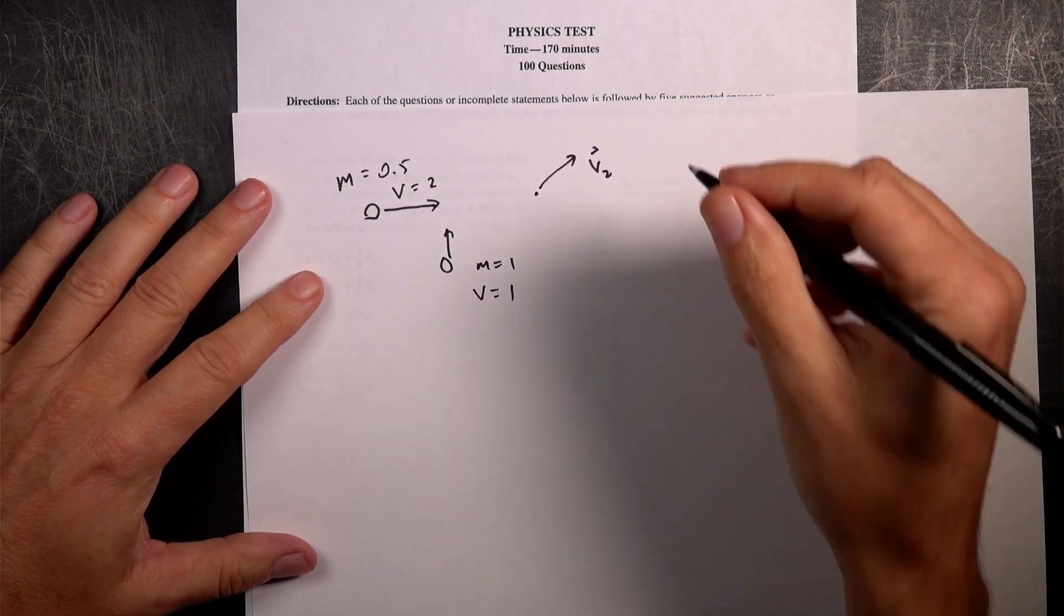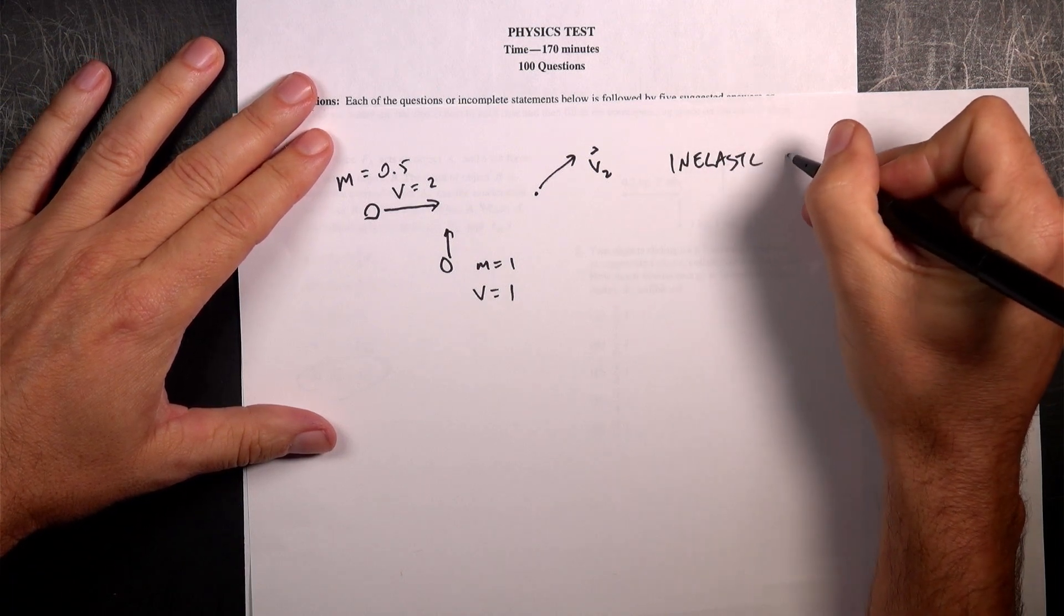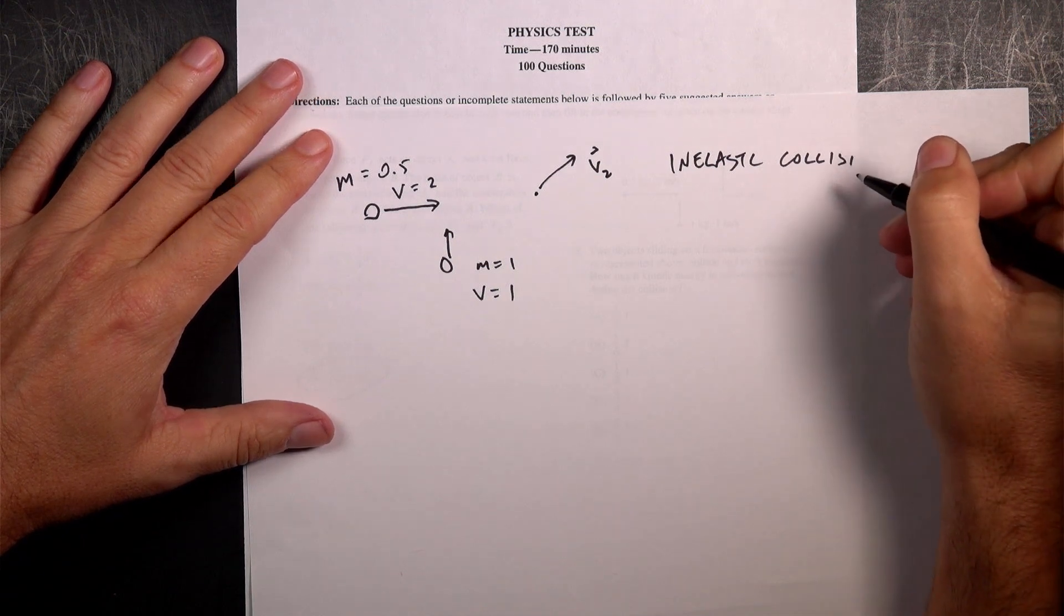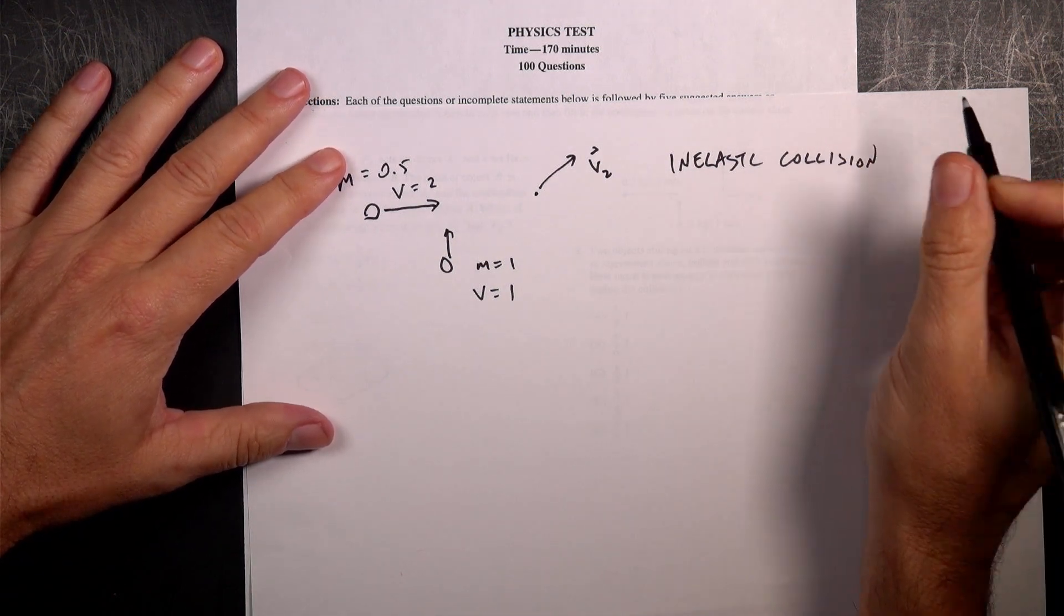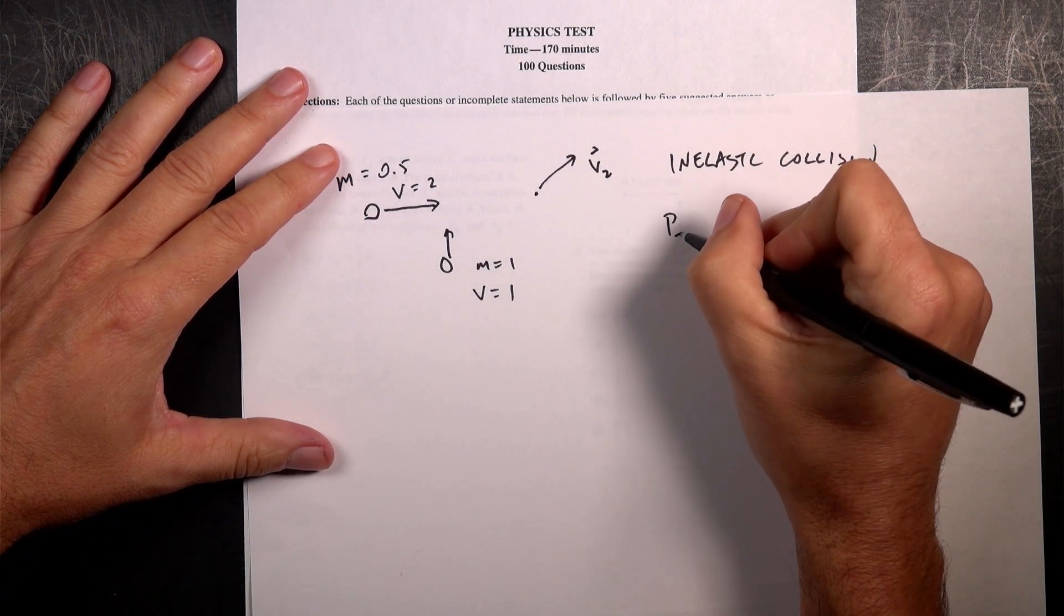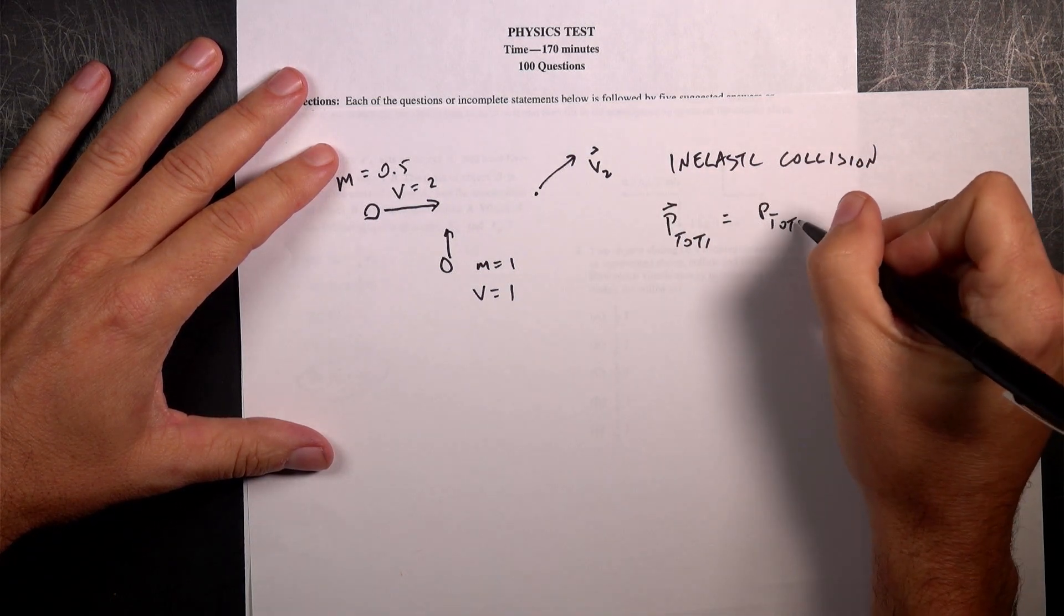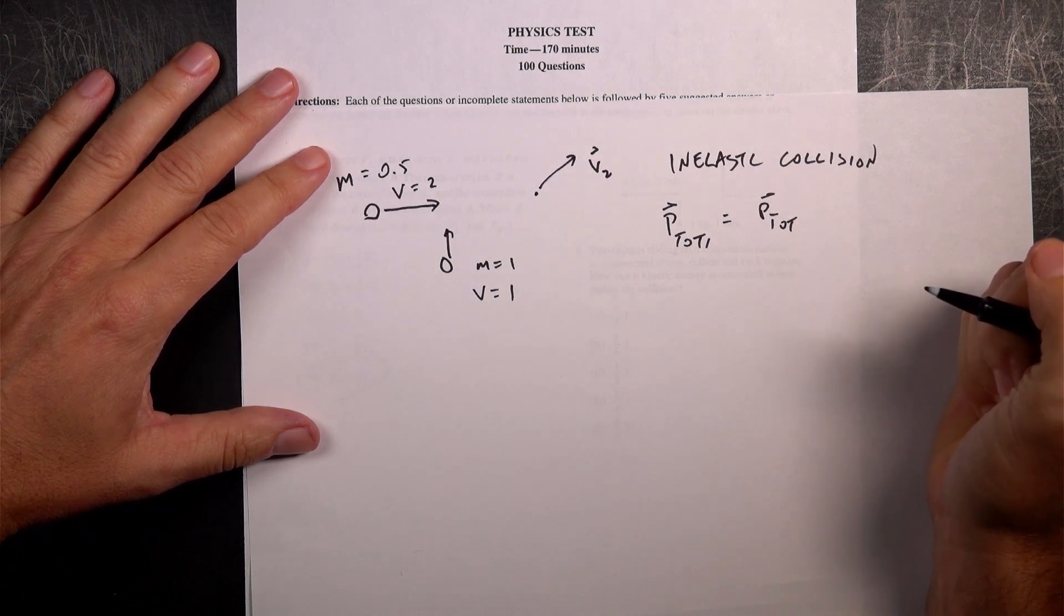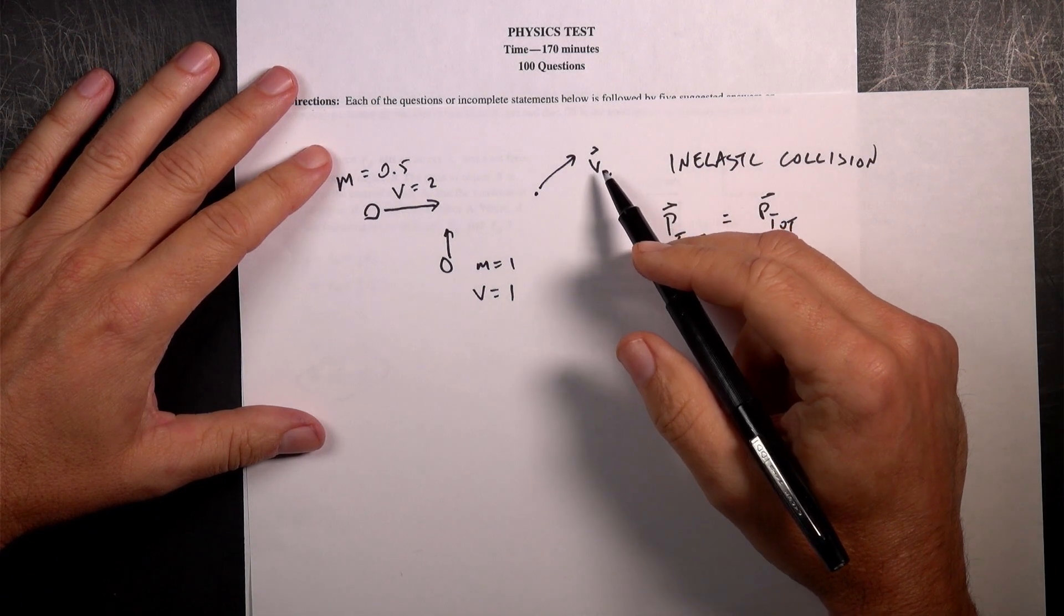Okay, so this is an inelastic collision. And in an inelastic collision, I know the following is true. P total 1, the momentum before, is equal to the momentum afterwards. The kinetic energy is not. But if I find the change in kinetic energy, I can do that. What's important is that they have the same velocity afterwards.